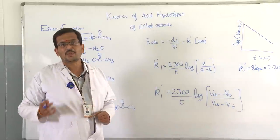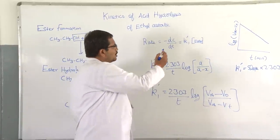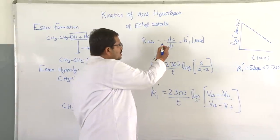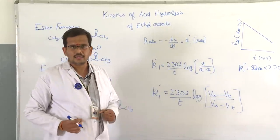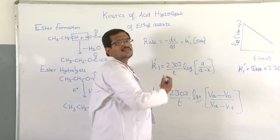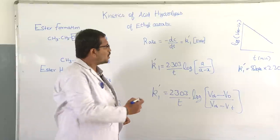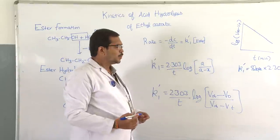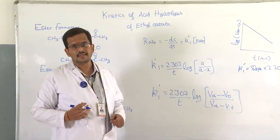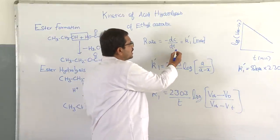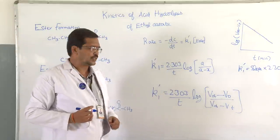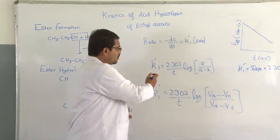The rate is the speed of the reaction with respect to time — we are measuring concentration with respect to time. The negative symbol indicates the decrease in concentration of the ester with respect to time. We use dc/dt because it represents the smallest change in concentration for the smallest change in time.